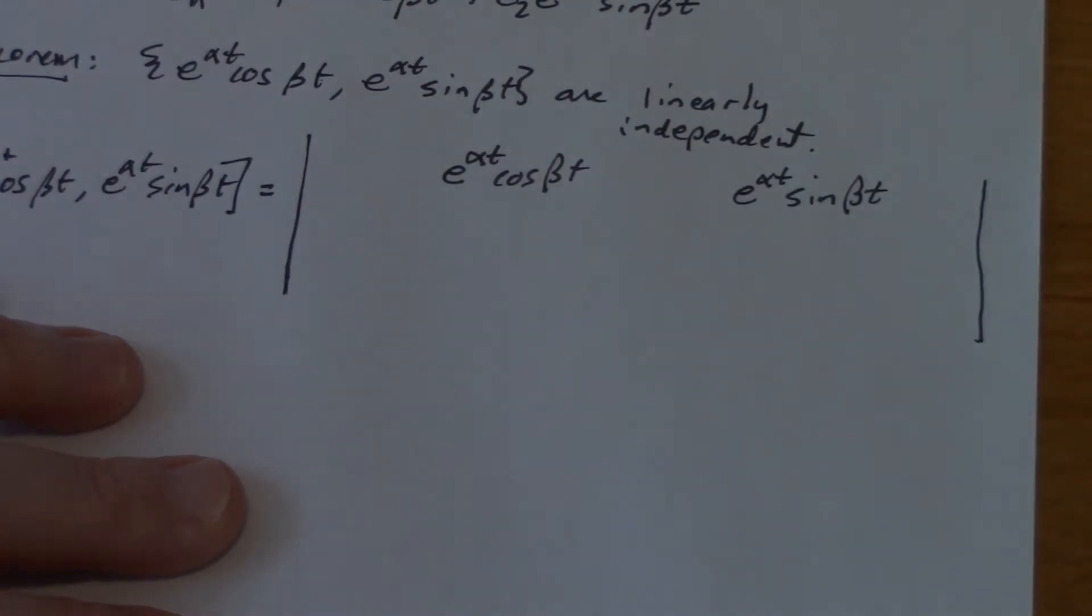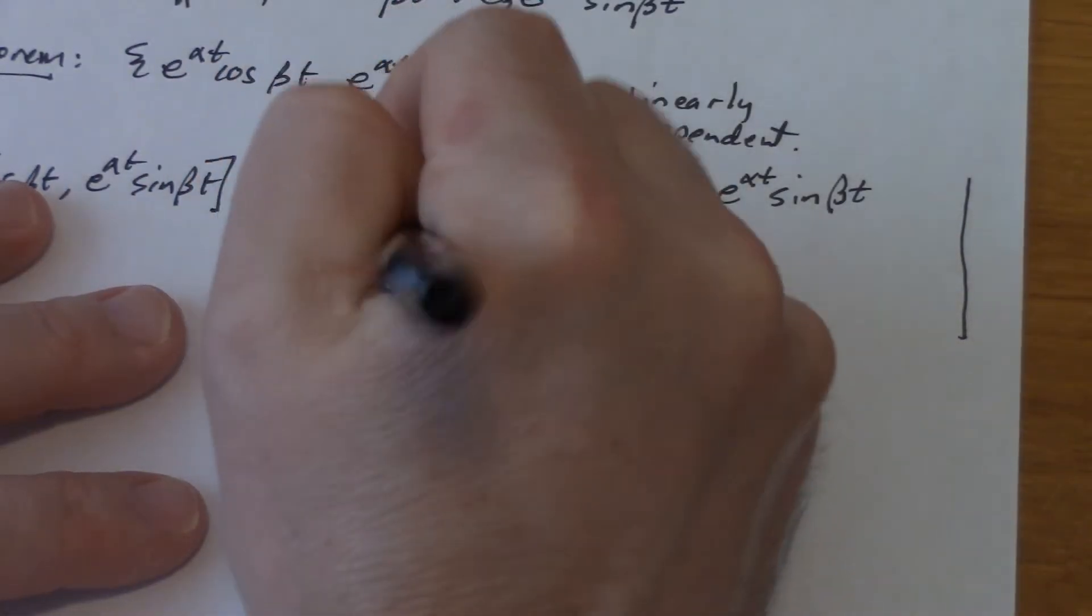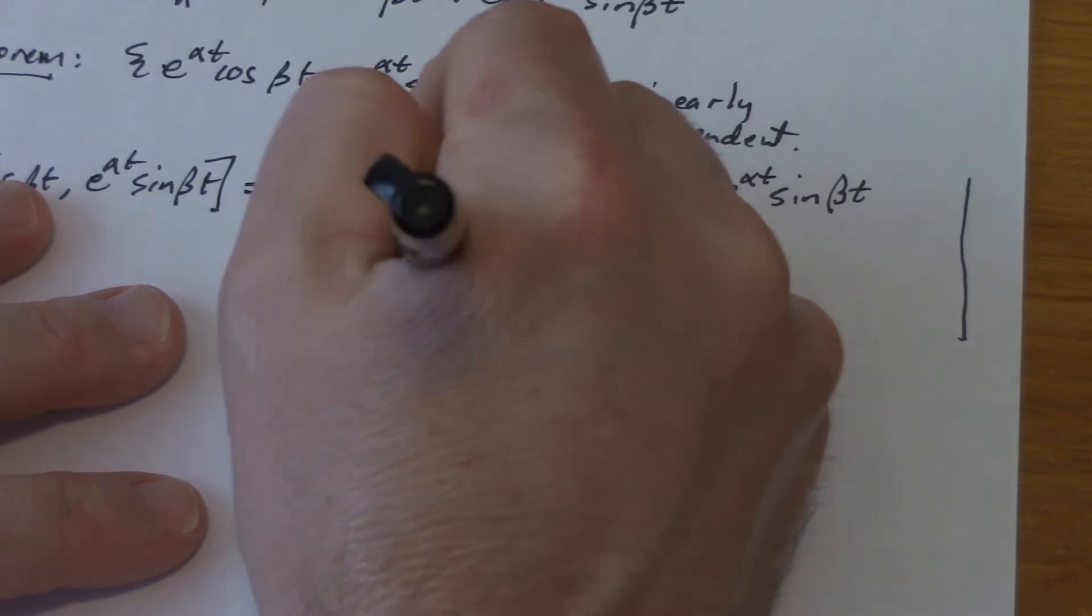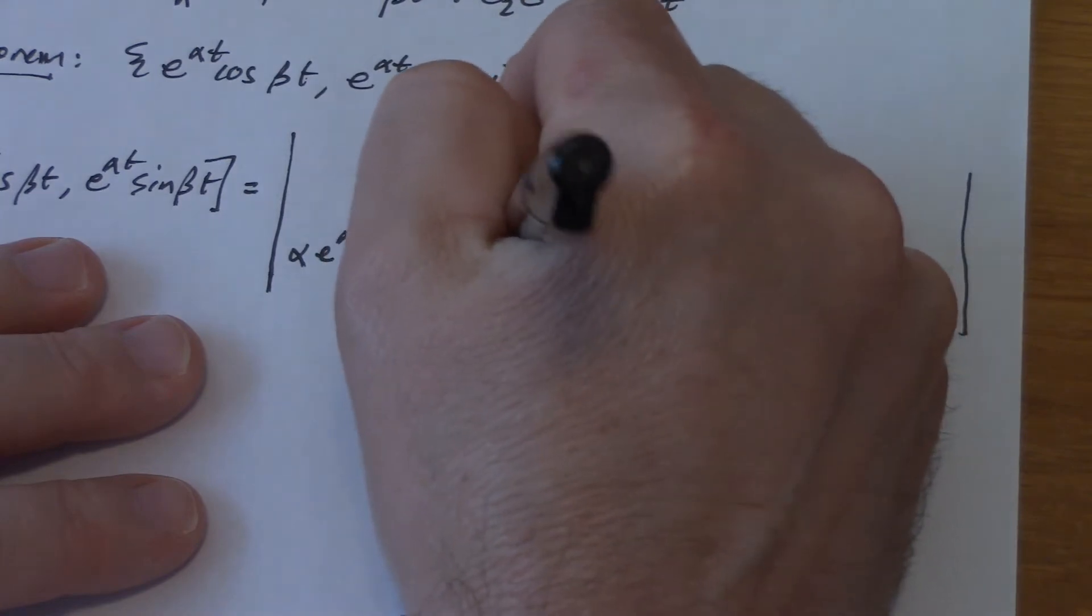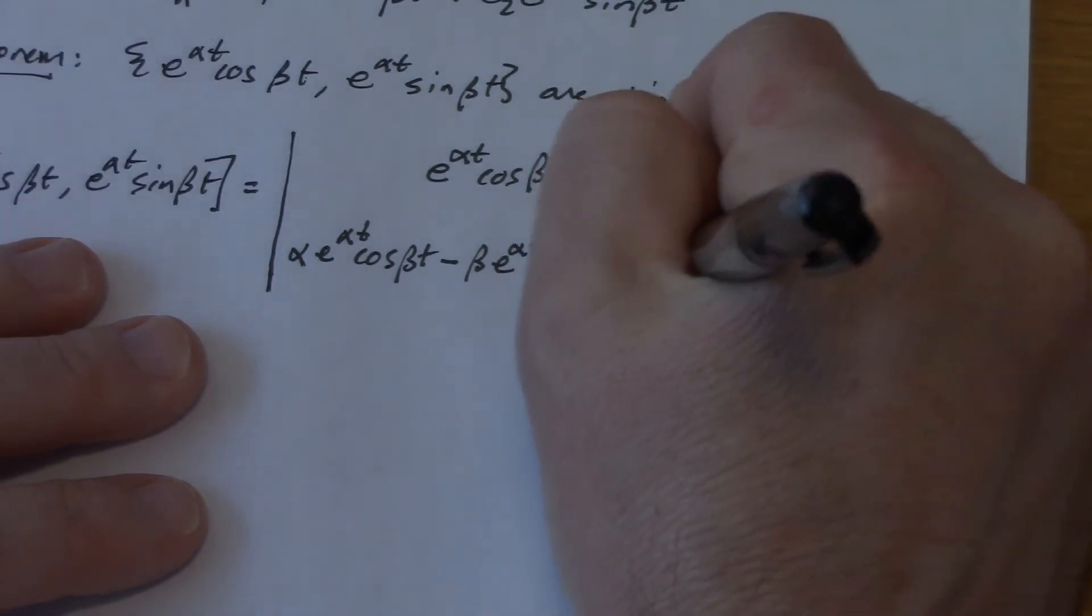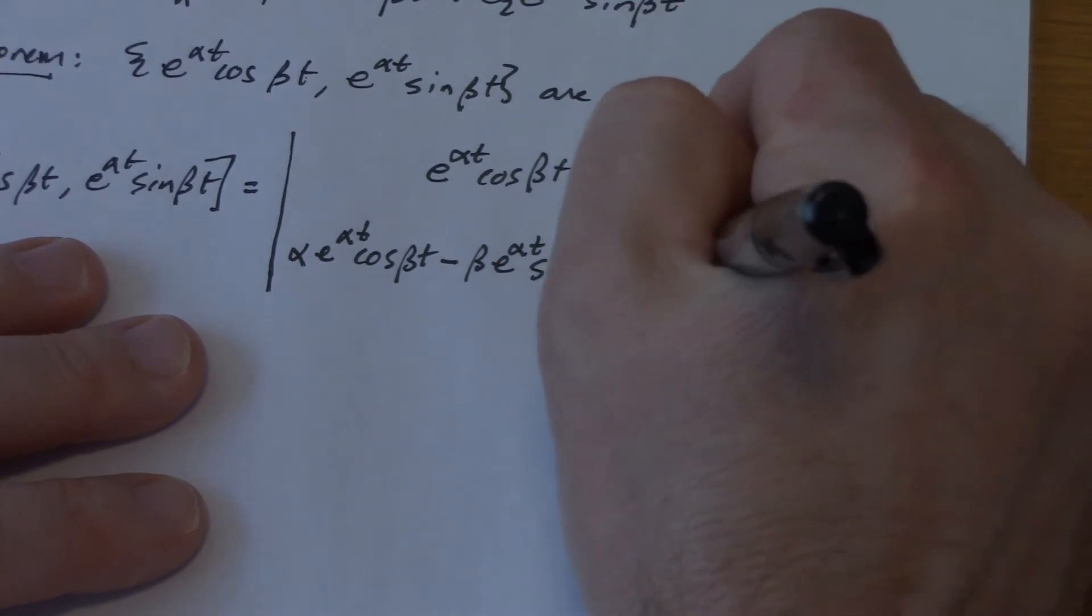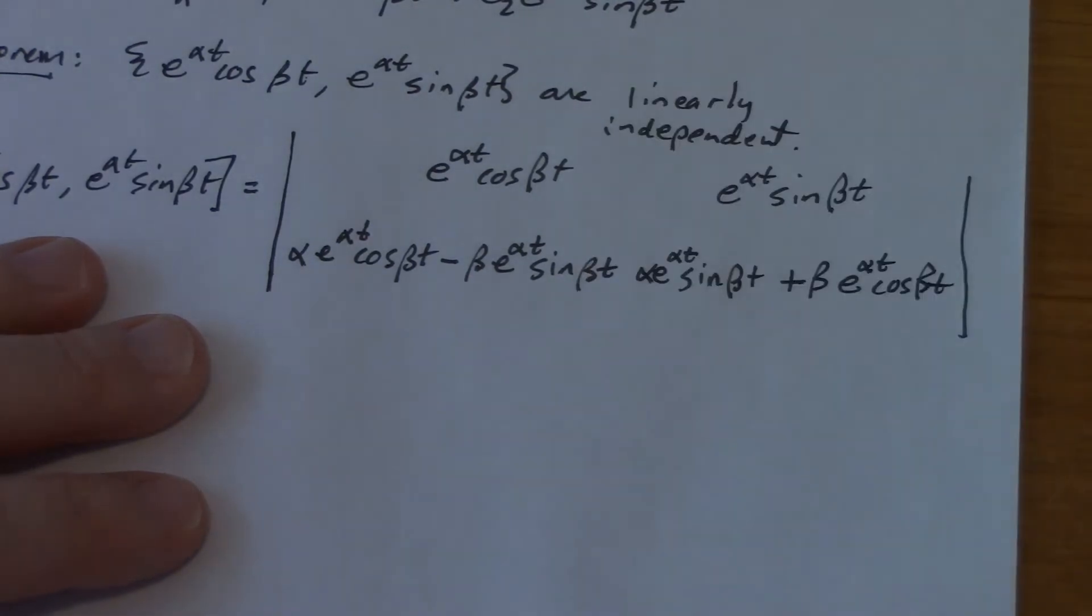When I'm taking the derivatives, I've got product rule with both of these two guys. So I'm going to have alpha e to the alpha t cosine beta t, that's taking the derivative of e to the alpha t, and then minus beta e to the alpha t sine beta t, that's taking the derivative of cosine of beta t. And here I'm going to have alpha e to the alpha t sine beta t plus beta e to the alpha t cosine beta t. There's an imaginary line there that separates those two guys.